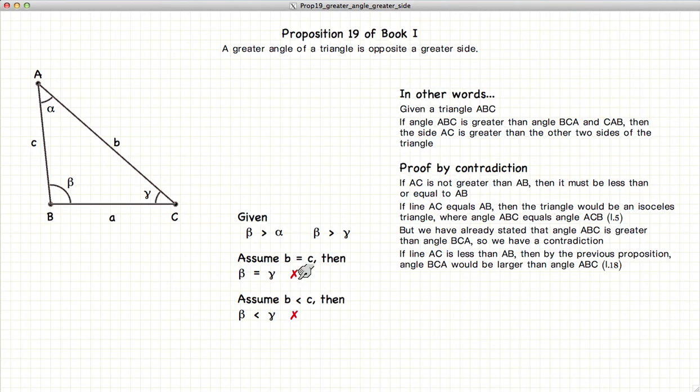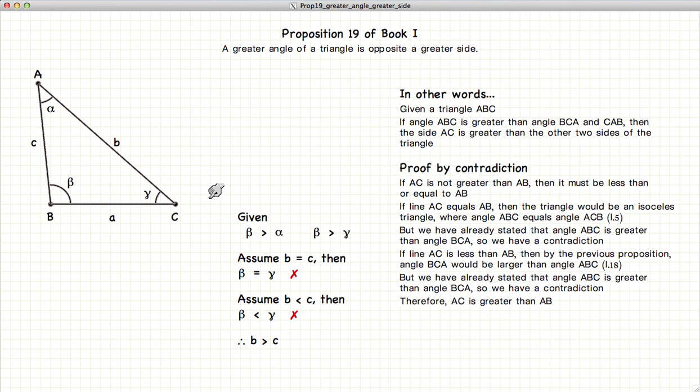So if B does not equal C, nor is it less than C, the only result can be that B is greater than C. And thus we have demonstrated that the largest side will be opposite the largest angle.